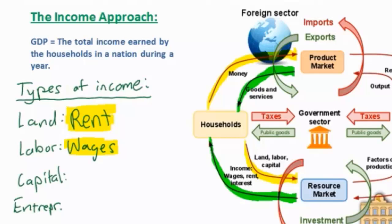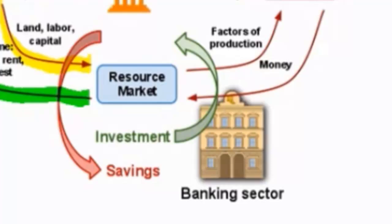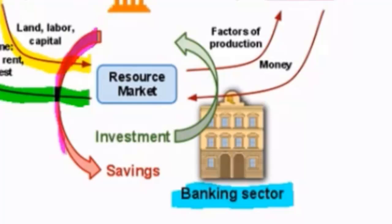Next, let's talk about capital. Capital is a bit more difficult to understand. Households receive interest payments in exchange for their capital resources. To explain this, we need to look at the banking sector in our circular flow diagram. Many households like to save money, and when households save, there is a leakage from the circular flow of income. This is because a penny saved is not a penny spent — therefore, there is less spending on goods and services when households save.